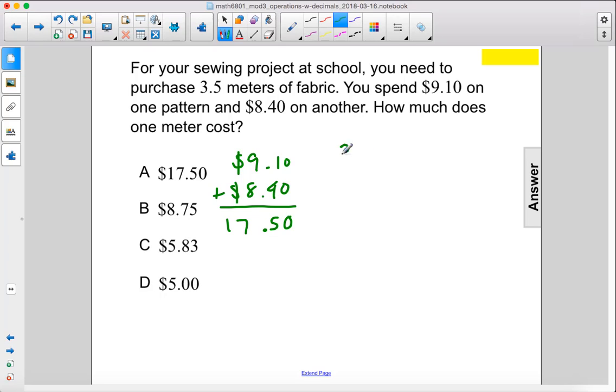So then we have 3.5 going into 17.50. We'll multiply both sides by 10 to move the decimal over 1, so that's 35 into 175.0. 35 does not go into 1 or 17, but it does go into 175, and it goes in exactly 5 times. 5 times 35 is 175.